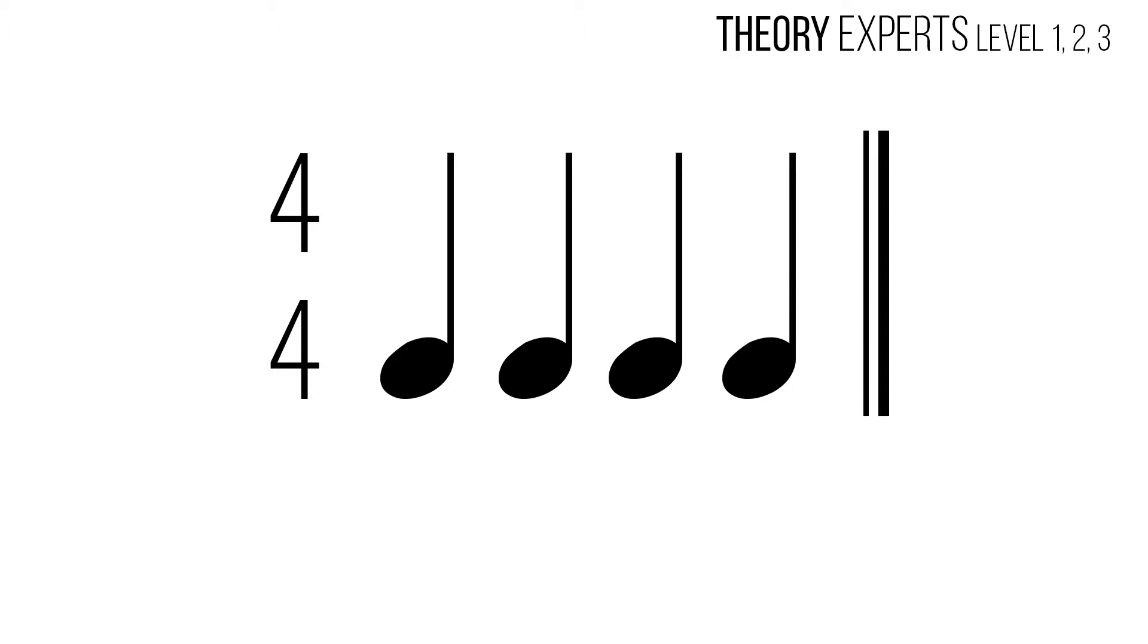In 4-4 time, there are four quarter notes per measure and a single quarter note equals one beat. Writing in the counts of the beat below the appropriate symbols shows where the beat falls within the measure.